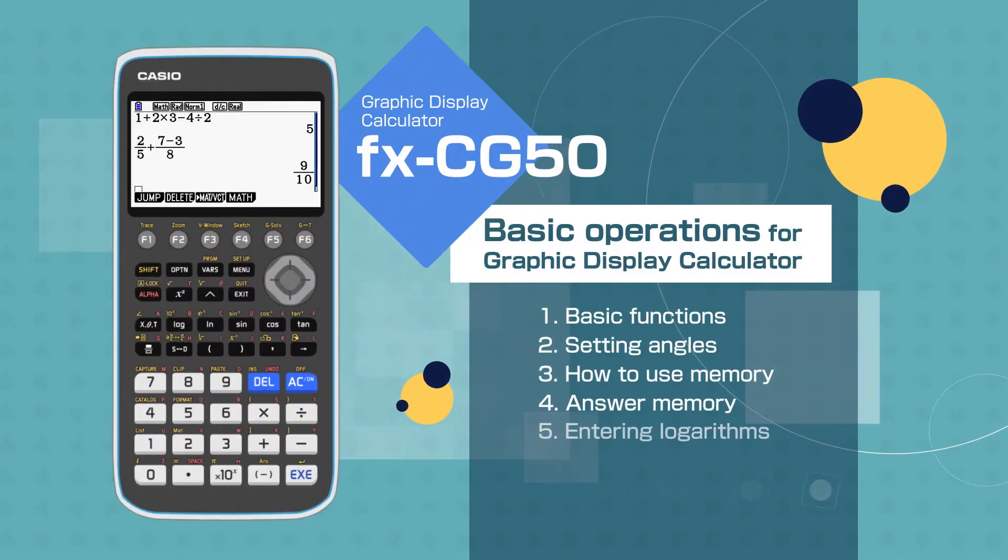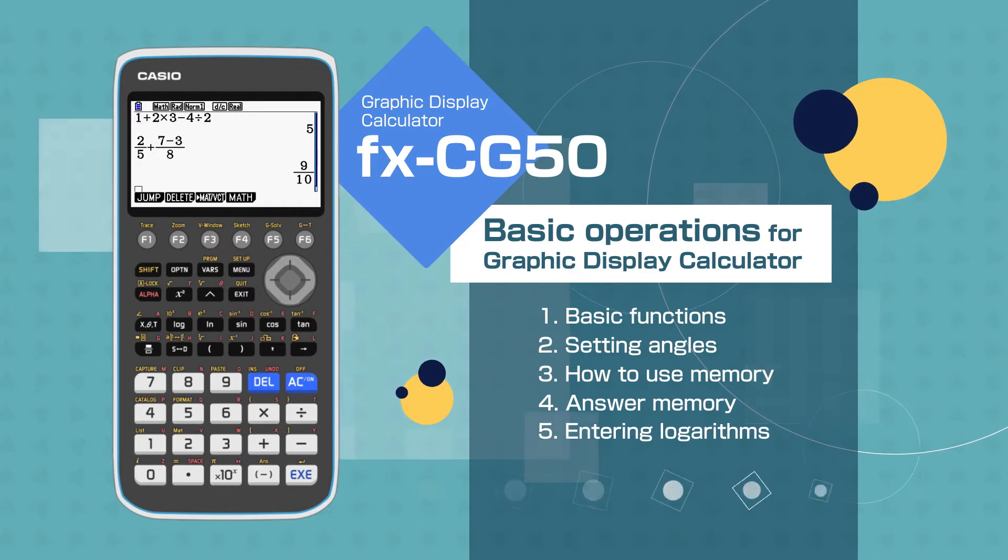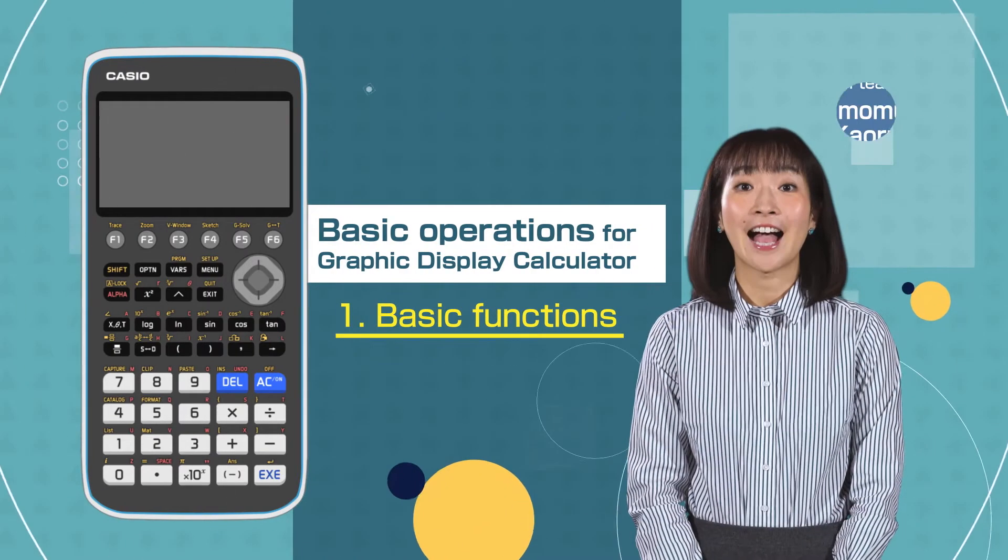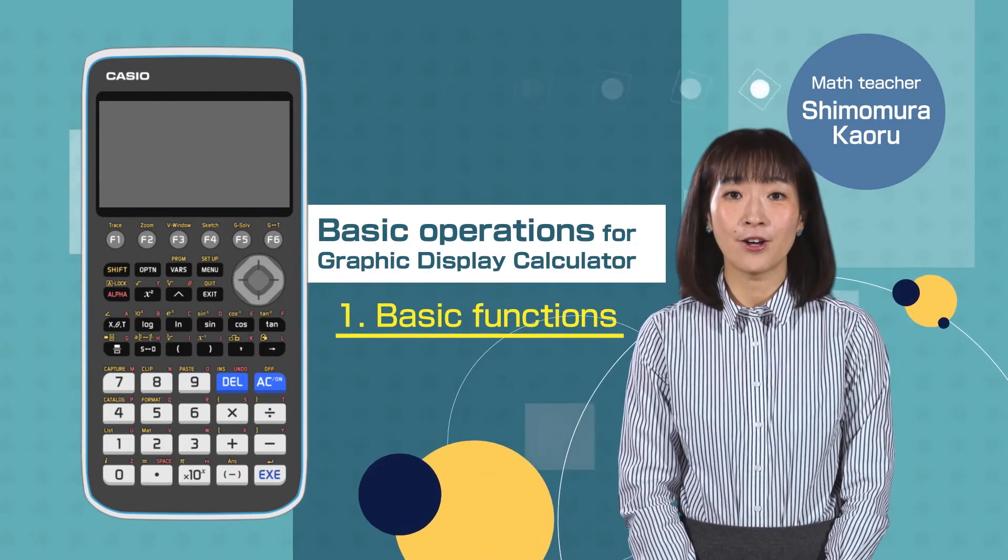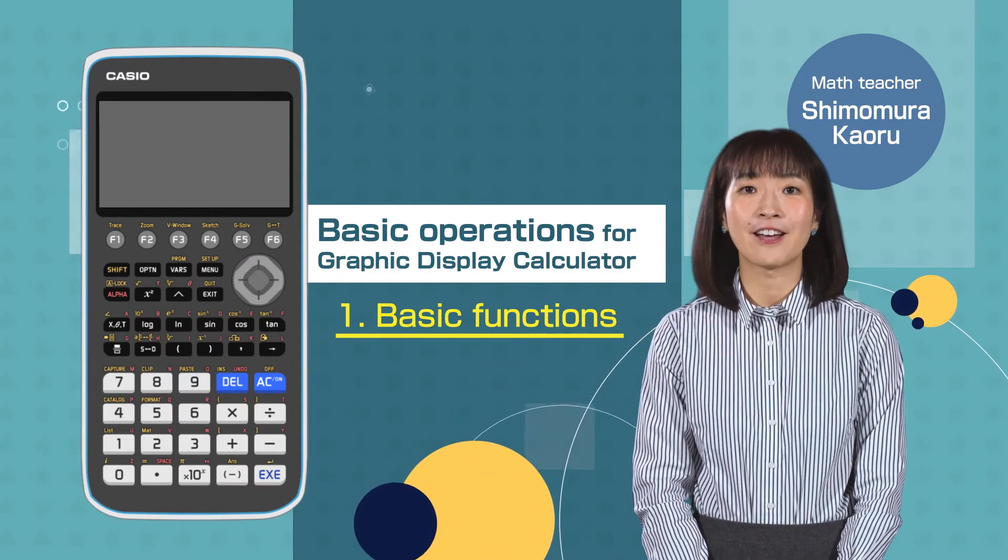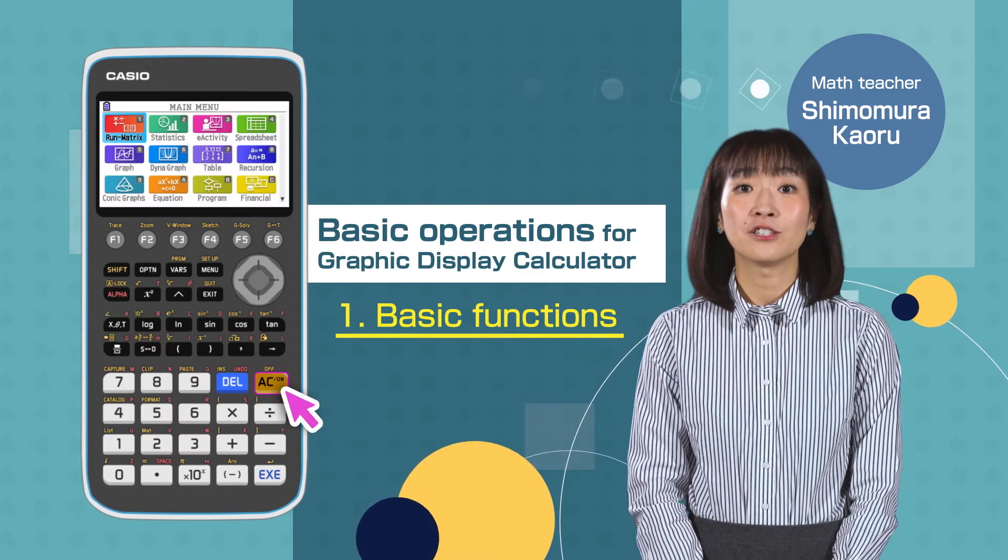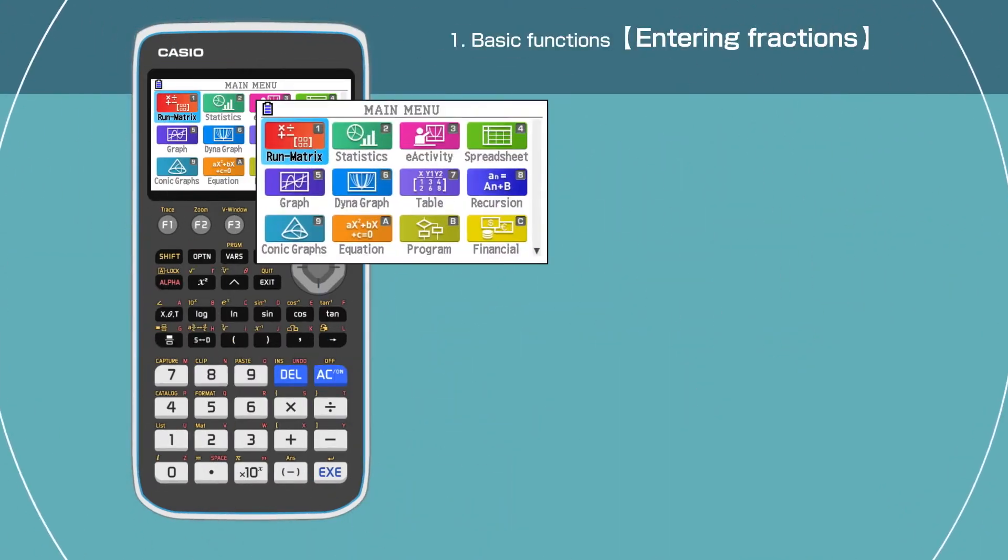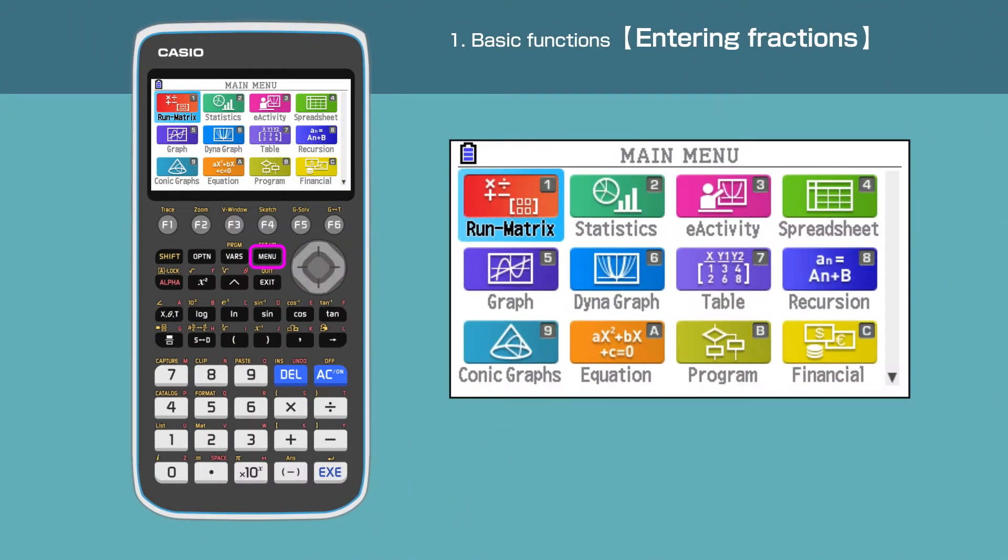Basic operations for graphic display calculator. In this video, we are going to show how to enter equations with the Casio FX-CZ50. Switch on the calculator by pressing the AC button. Press the menu button to open the main menu.